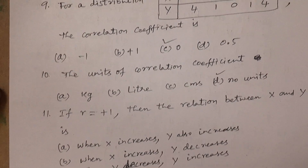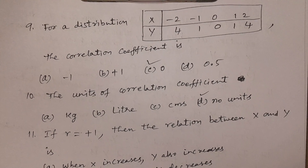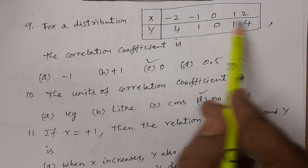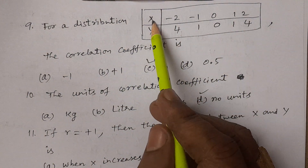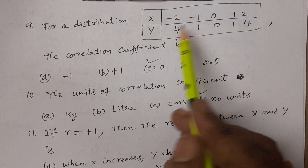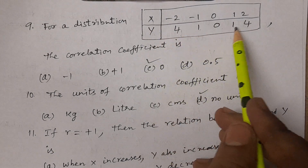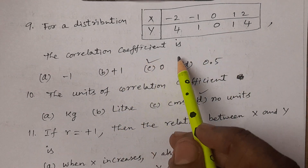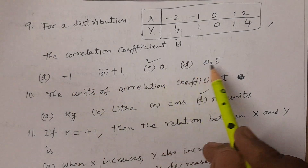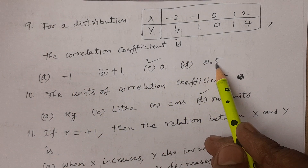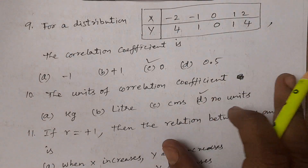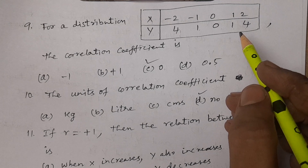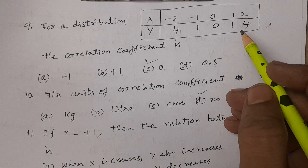Question number nine: for a distribution, the x values are minus two, minus one, zero, one, two and the y values are four, one, zero, one, four. The options for the correlation coefficient are minus one, plus one, zero, and zero point five. To calculate the correlation coefficient, you need to compute x bar, y bar, covariance, summation xi squared, summation yi squared, etc.